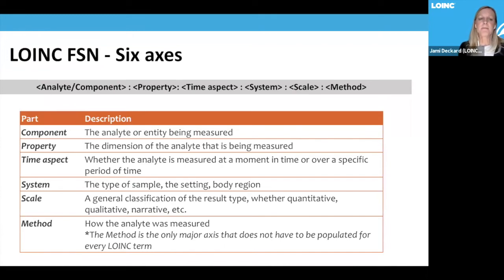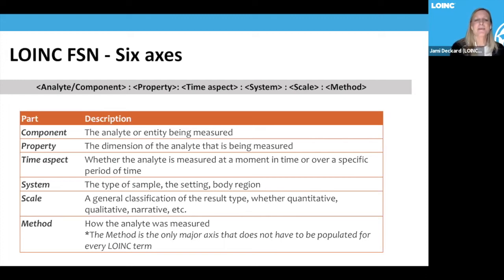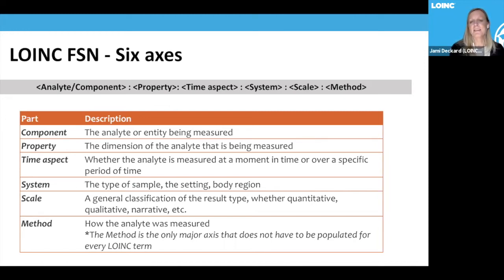The LOINC fully specified name has six axes. The first is the component or analyte — 'analyte' is commonly used in lab, but 'component' is more frequently used to describe this axis in clinical contexts. The second axis is the property, which is the dimension of the analyte being measured. The third axis is the timing or time aspect — whether the analyte or observation is measured at a moment in time (PT, point in time, the most common) or over a specific period such as 24 hours.